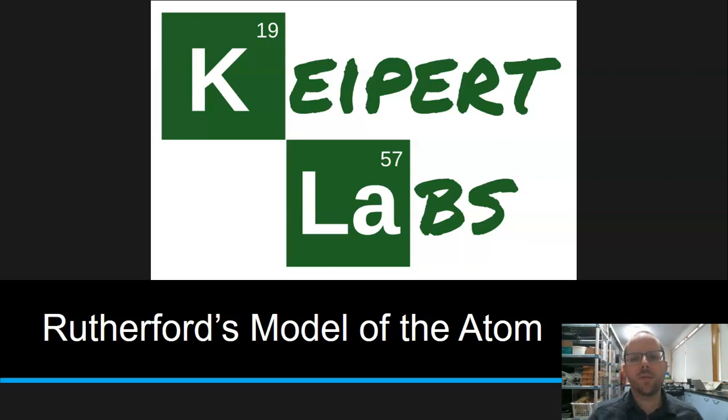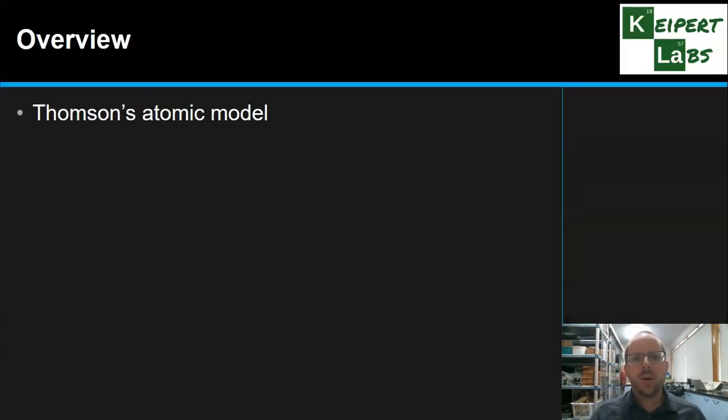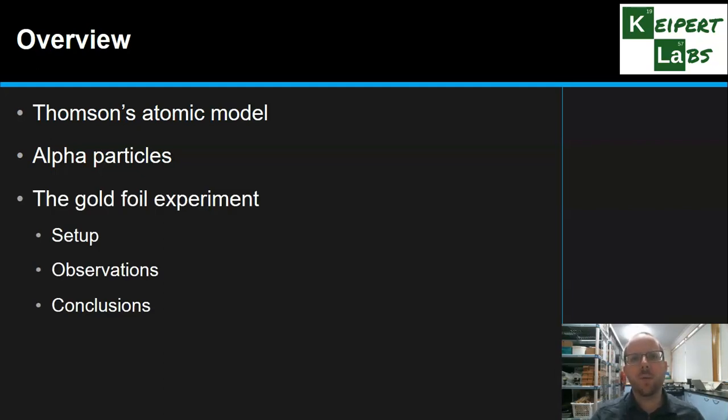In today's video we're going to talk about Rutherford's model of the atom. We're going to look at Thomson's atomic model, how alpha particles played a part in the development of Rutherford's model, and the Gold Foil experiment - its setup, the observations that Rutherford and his team made, and the conclusions they could draw. Finally, we'll look at the features of Rutherford's atomic model that resulted from that.